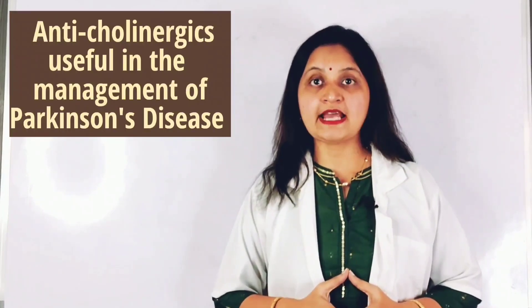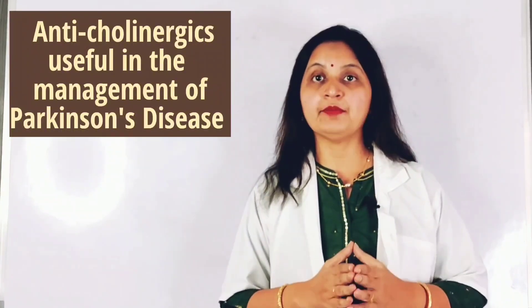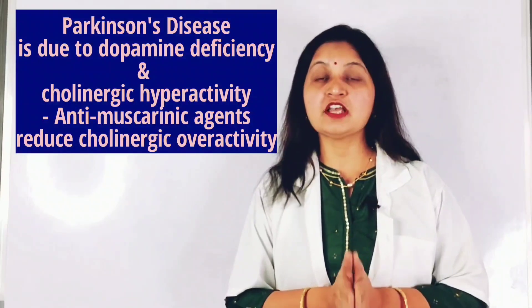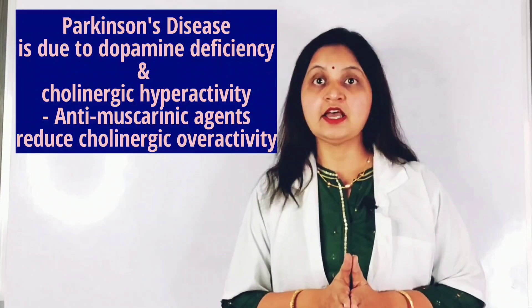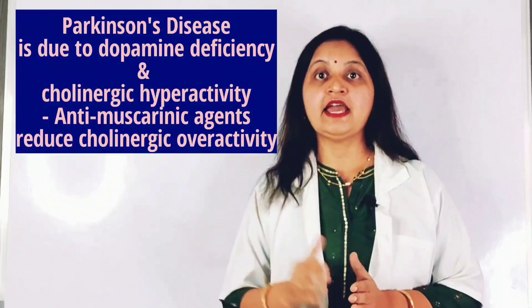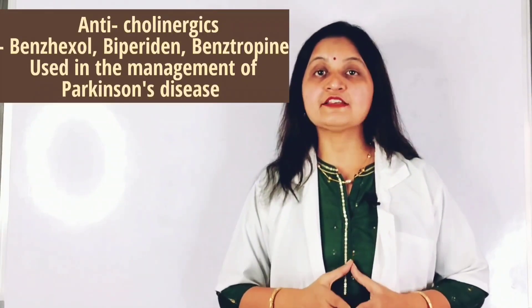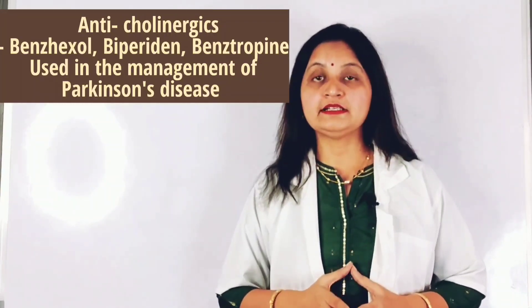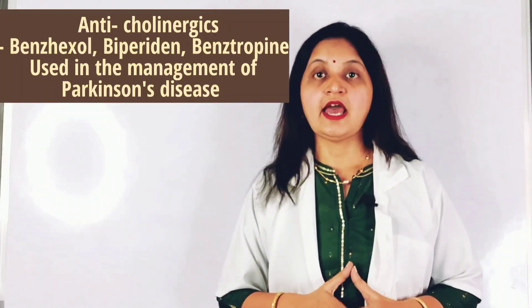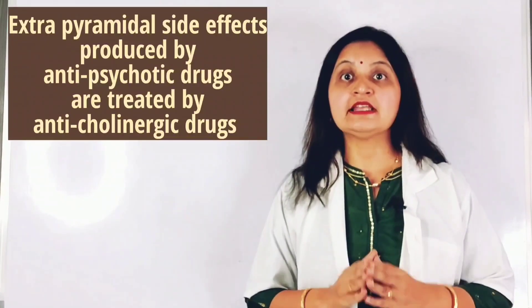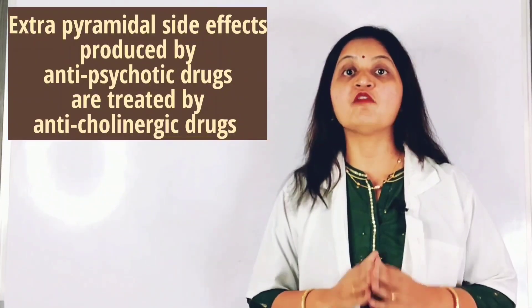Anti-muscarinic agents can be used in the management of Parkinson's disease, which is characterized by akinesia, rigidity and tremor due to dopamine deficiency and excessive cholinergic activity. These agents reduce cholinergic hyperactivity, thereby easing symptoms. Centrally acting anti-cholinergic drugs such as trihexyphenidyl, biperiden, benzhexol, and procyclidine can be used. Additionally, anti-psychotic drugs produce extrapyramidal side effects due to cholinergic hyperactivity, and anti-cholinergics can treat these extrapyramidal signs and symptoms.